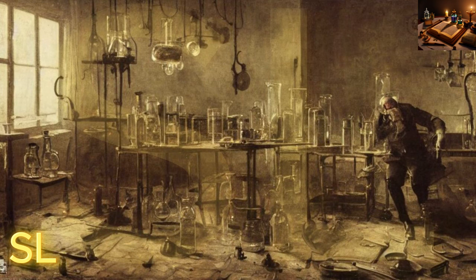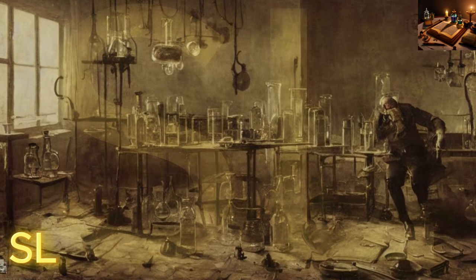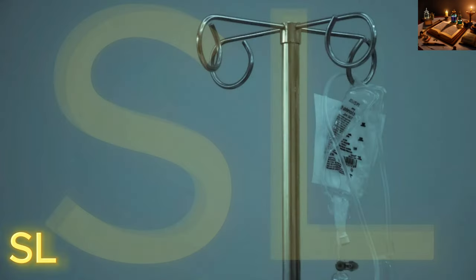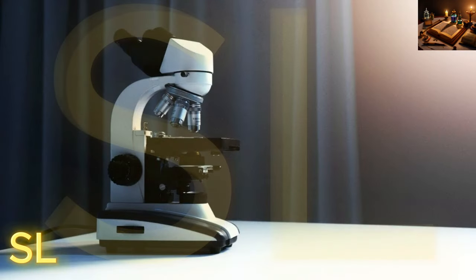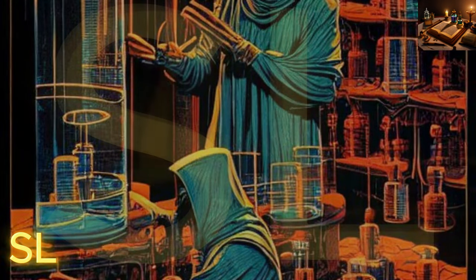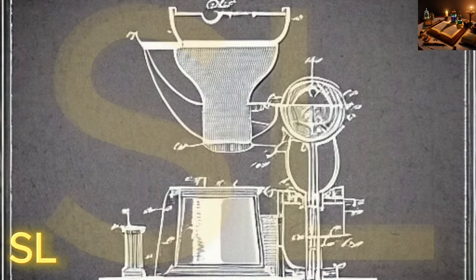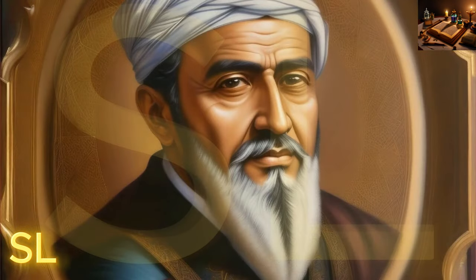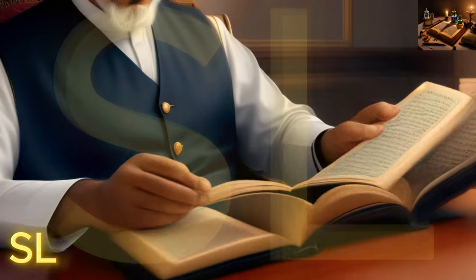Jabir Ibn Hayyan began his professional life as a physician, but quickly became fascinated with chemistry. He was captivated by the study of materials and their reactions, and started conducting his own experiments in his laboratory. His interest in chemistry started at an early age as he read books and references related to the field.